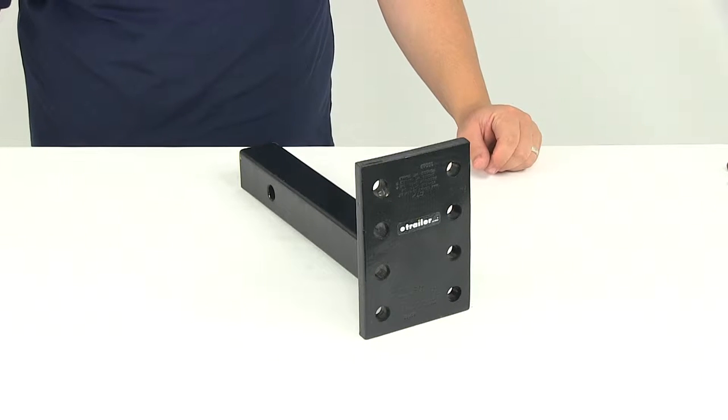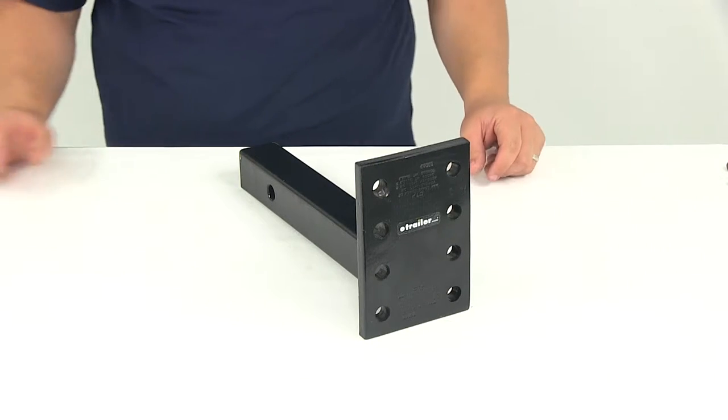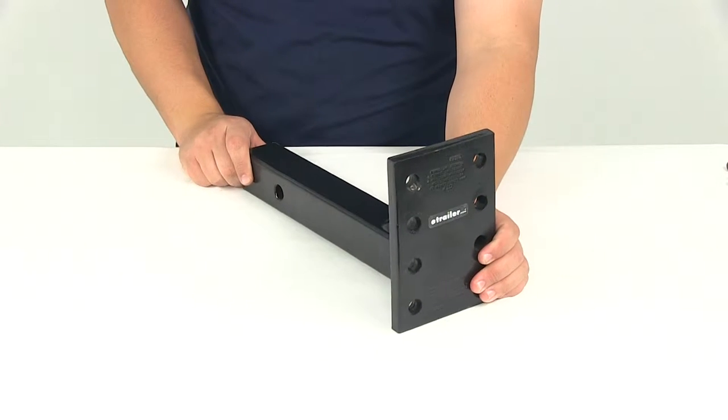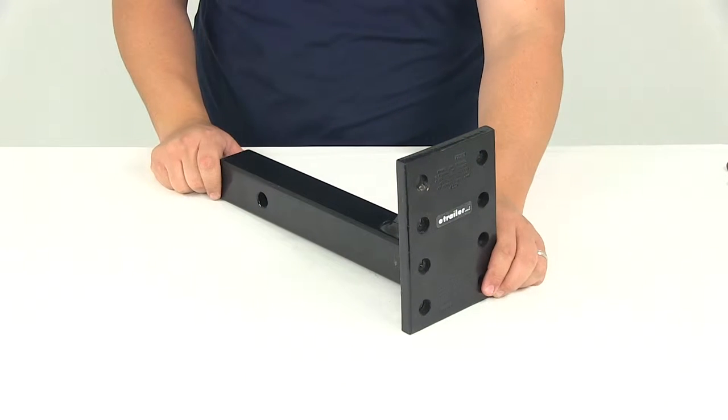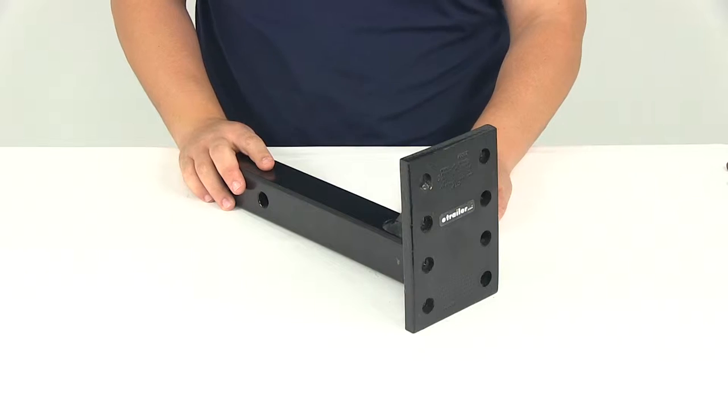Today we'll be reviewing part number 63059, the pintle hook mount from TowReady. The pintle hook mount slides into a 2 inch by 2 inch trailer hitch receiver to provide a good mounting location for a pintle hook.